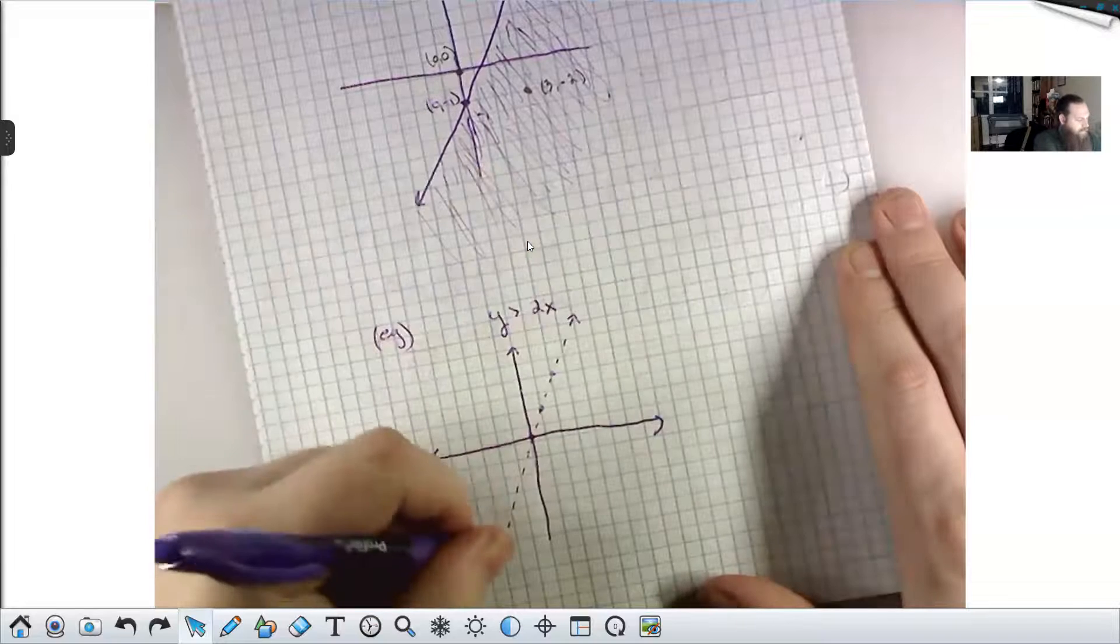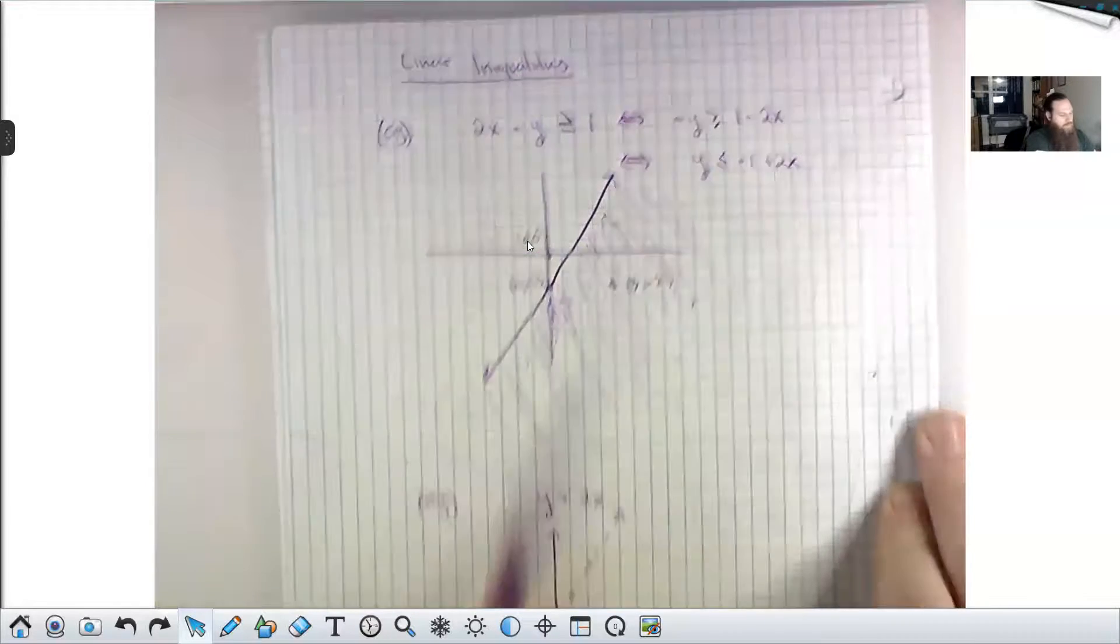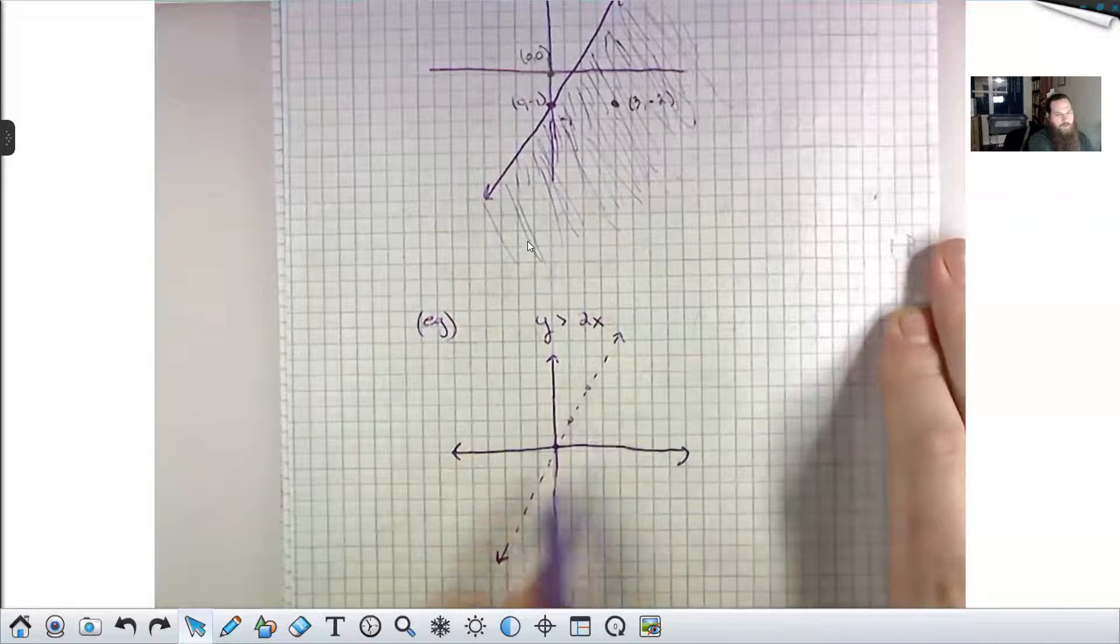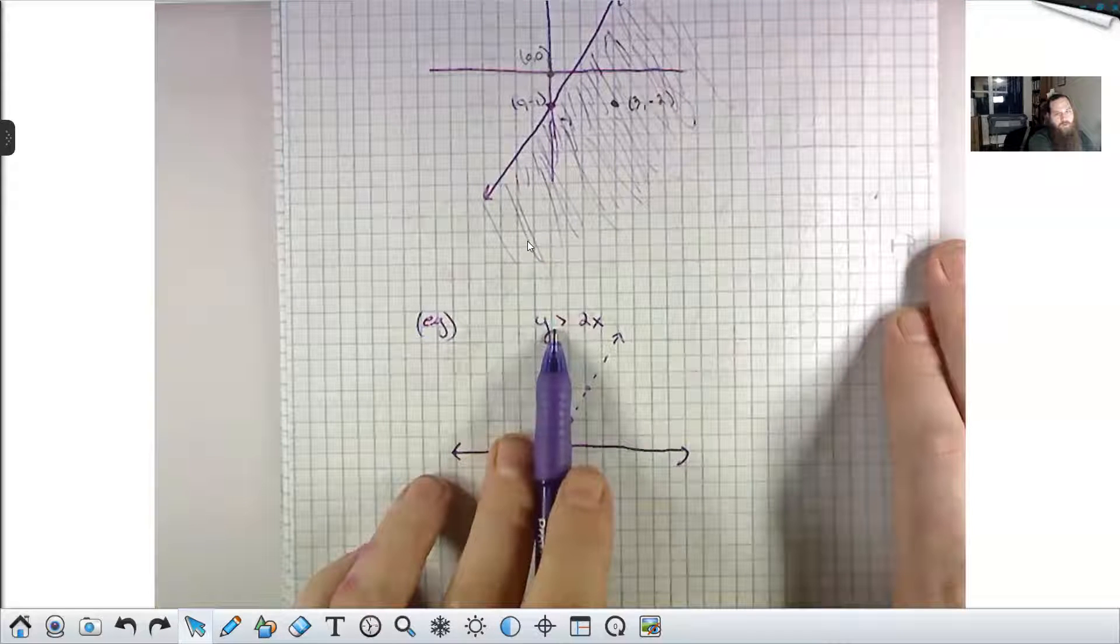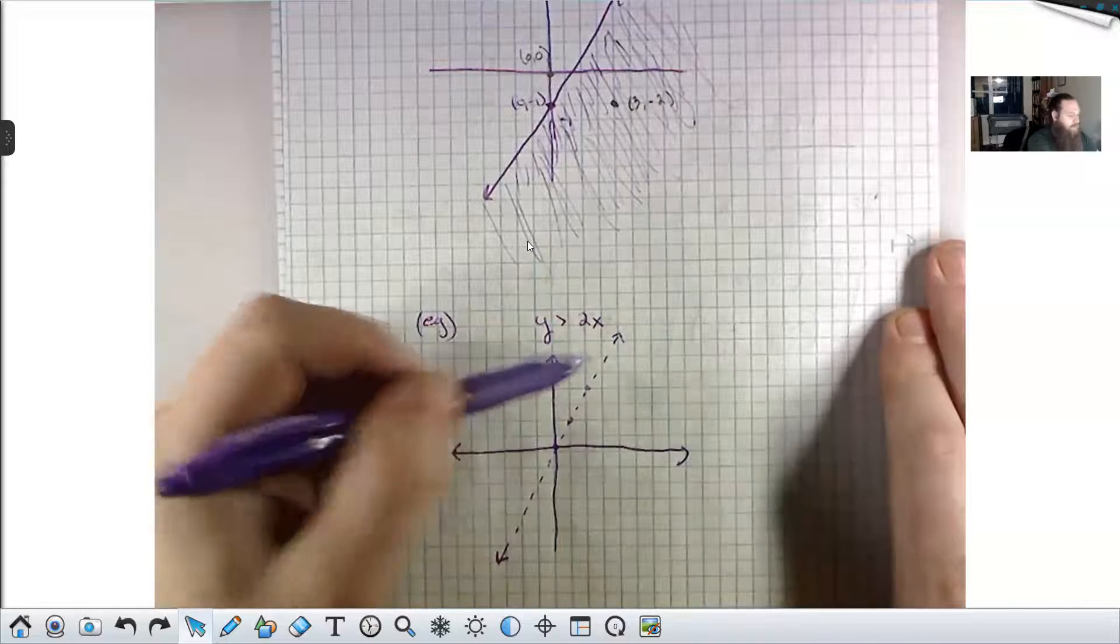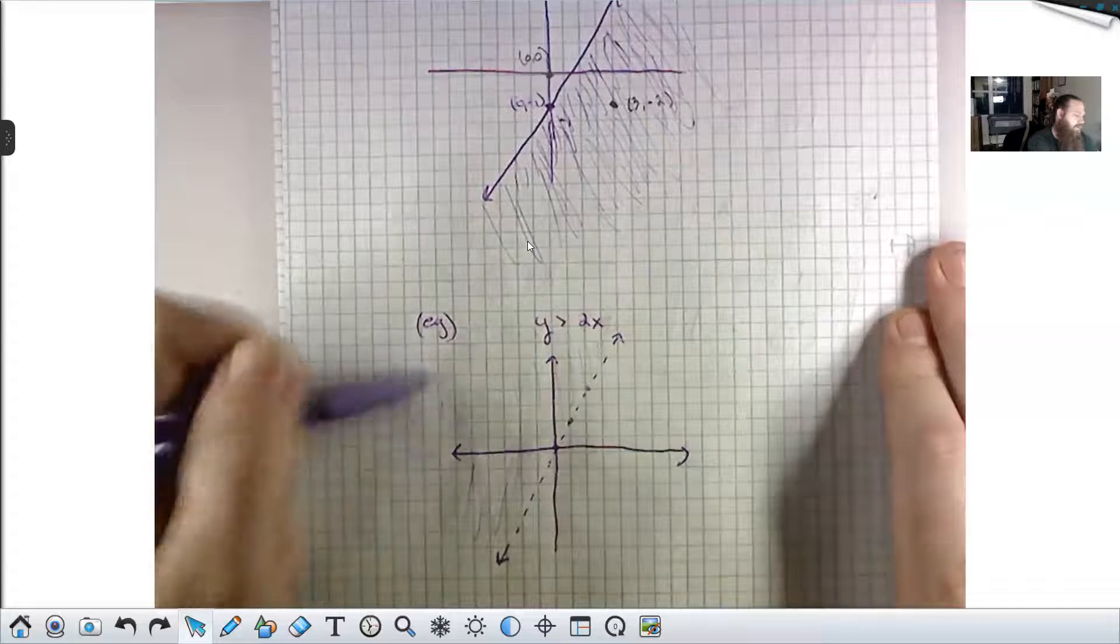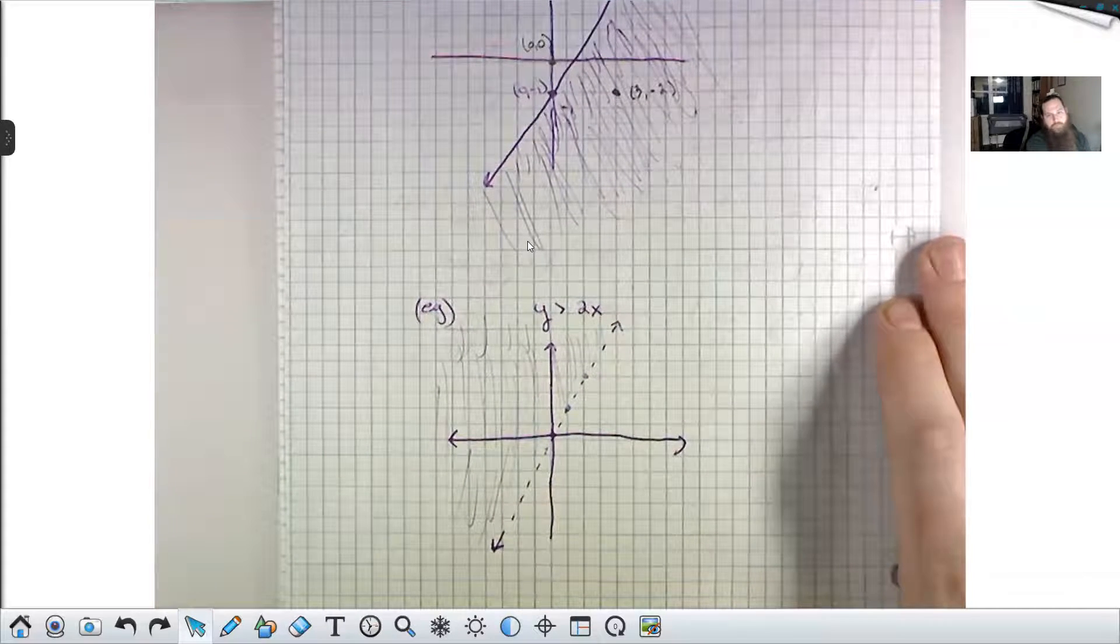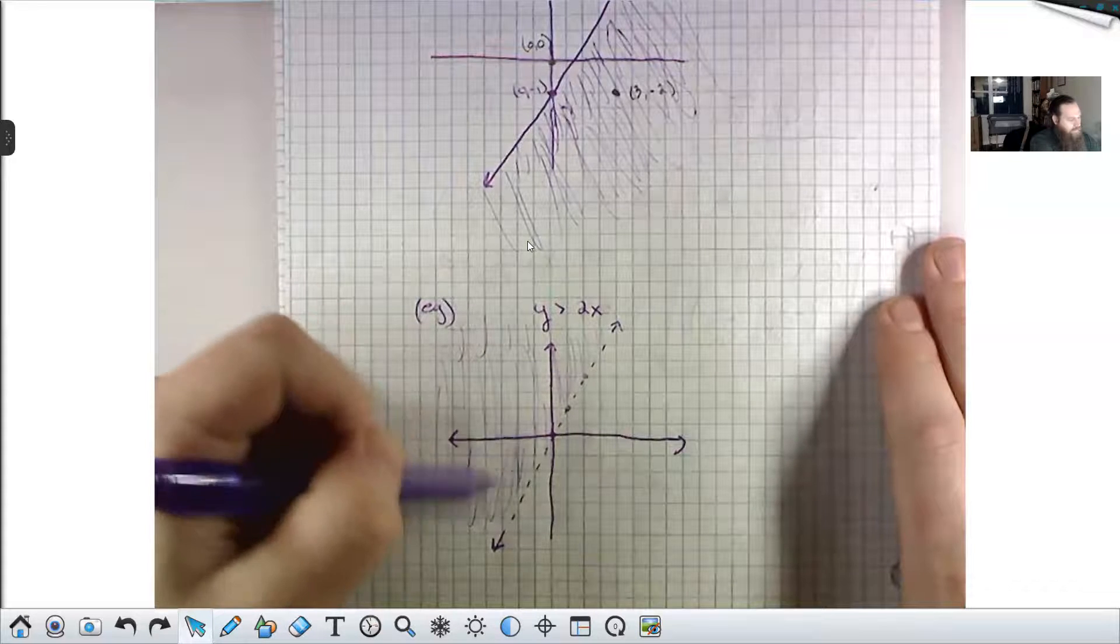For a strict inequality, that's what these are called. Strict inequality is strictly greater than, less than or equal to is weak. For strict inequalities, we draw the line dotted. We're talking here about all the y values that are greater than y equals 2x. We're talking about all the points that are strictly above this line. So my solution space here is this stuff we shaded up here. That's linear inequalities one at a time.